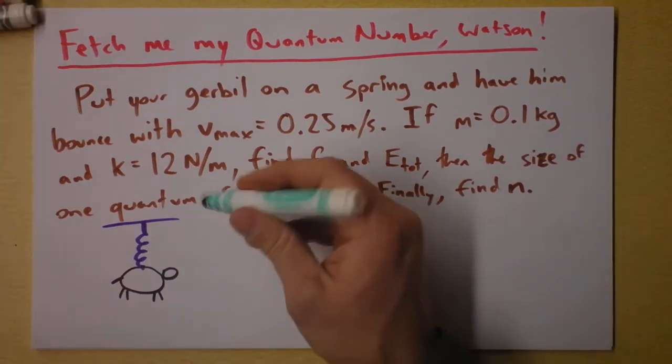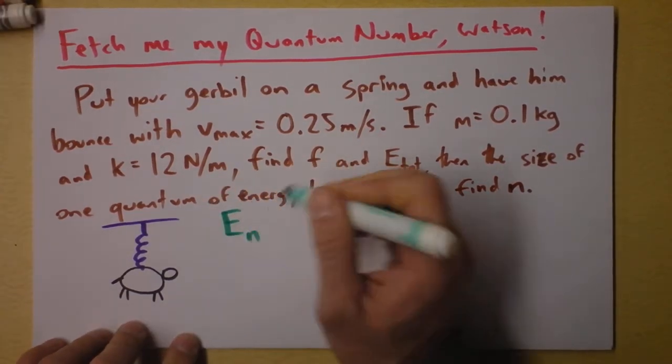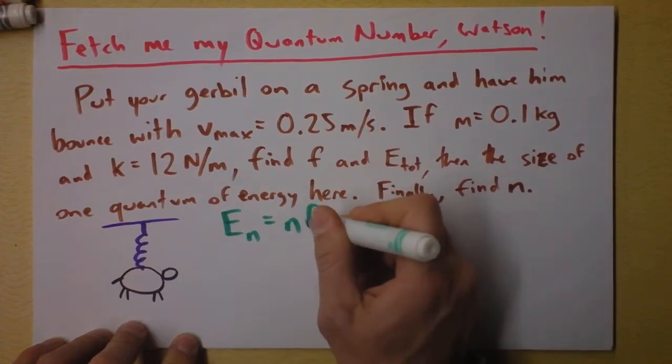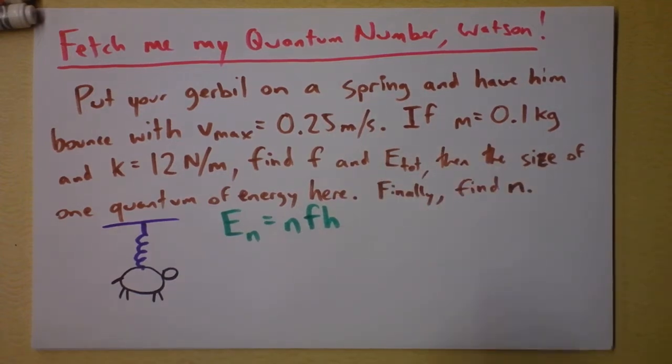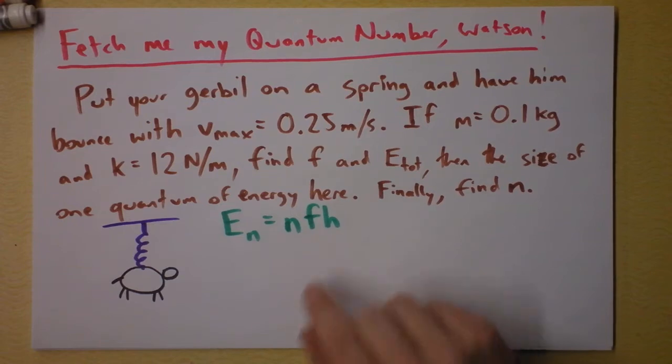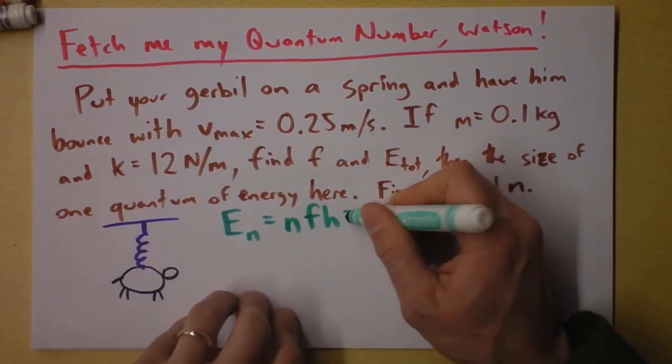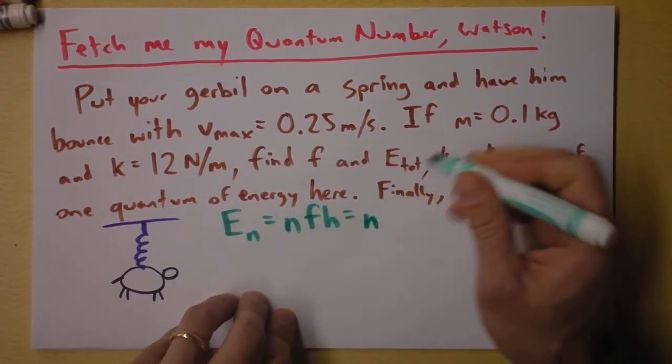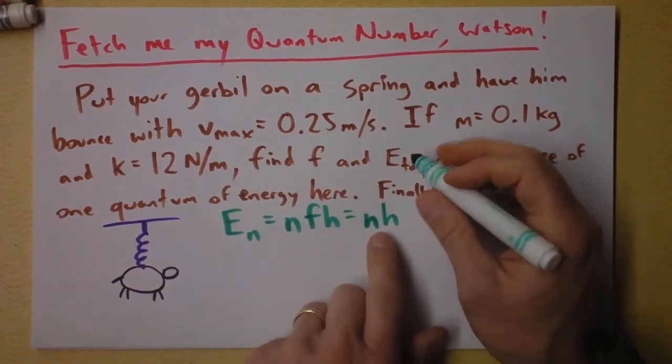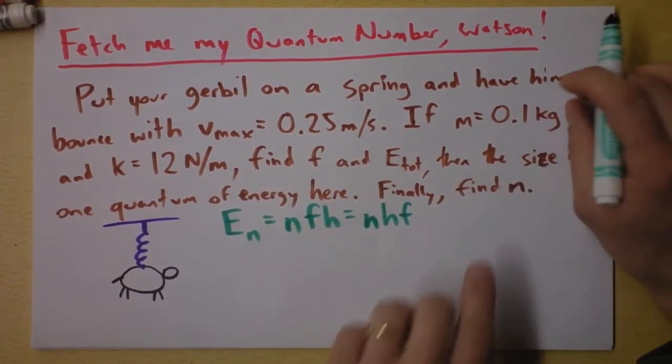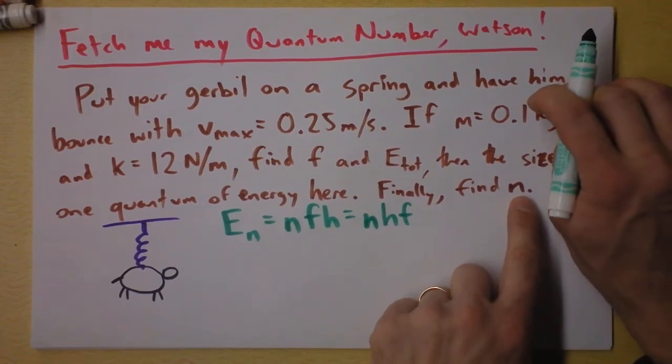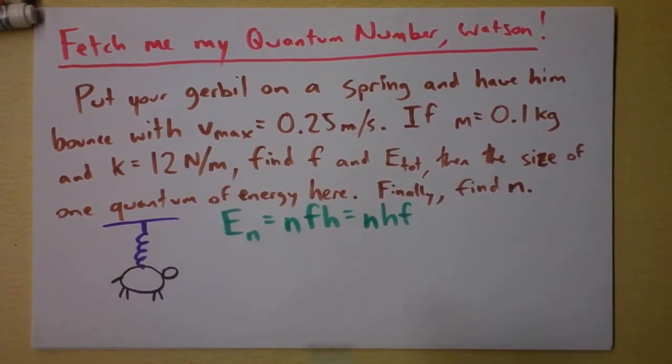A quantum problem. We're going to need E sub N equals N times F times H. That's Planck's constant right there. I'm going to go back and forth on that pronunciation, sorry. This looks like oomph, so I'm going to rewrite it as I should have put it, which is the Planck's constant right after the quantum number times the frequency. And finally, we're actually supposed to find the quantum number for this oscillating gerbil system.